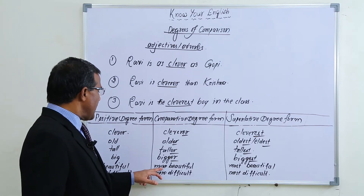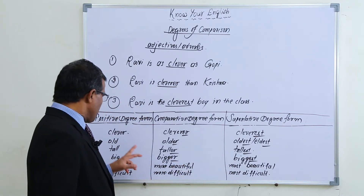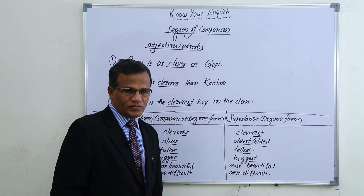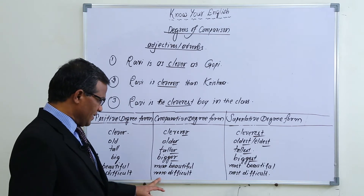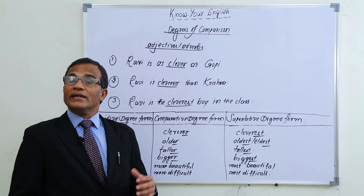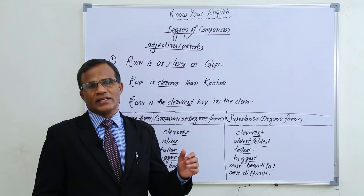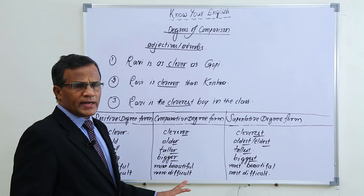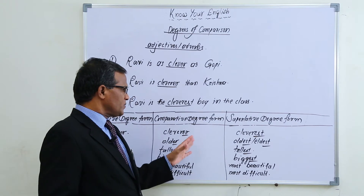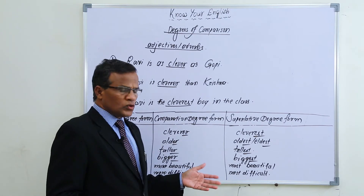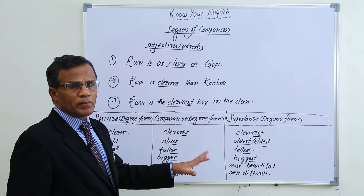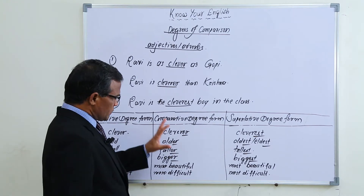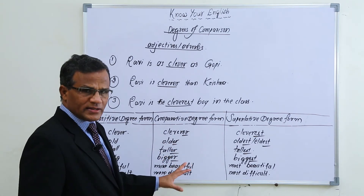There are some long adjectives — bigger in size — like 'beautiful,' 'difficult,' 'industrious.' For such words, we have to use 'more' before the positive degree to get the comparative degree form. So 'beautiful' becomes 'more beautiful' for comparative, and 'most beautiful' for superlative. Similarly: 'difficult — more difficult — most difficult'; 'industrious — more industrious — most industrious.' You have to learn these by heart.